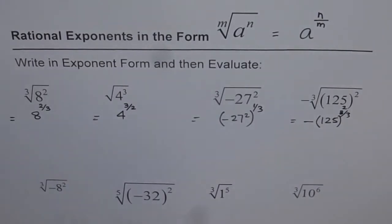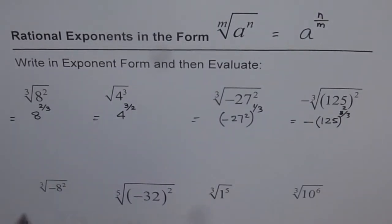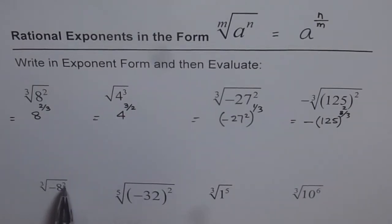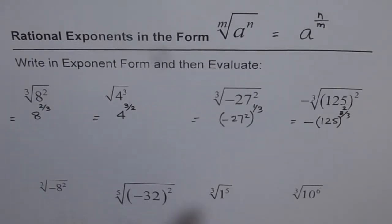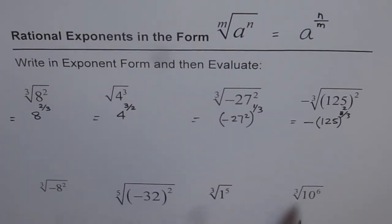Now you need to do the same thing for these four expressions: cube root of minus 8 squared, fifth root of minus 32 whole squared — so minus is also squared here — cube root of 1 to the power of 5, and cube root of 10 to the power of 6.